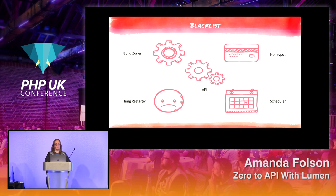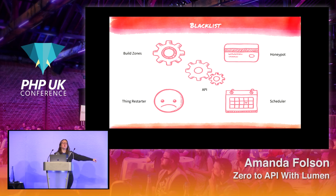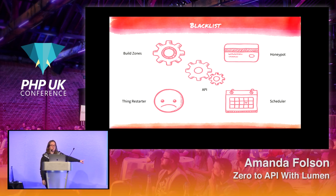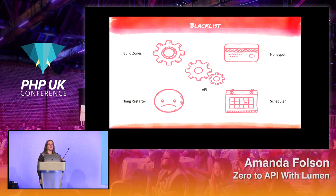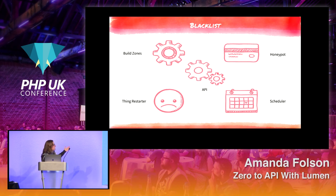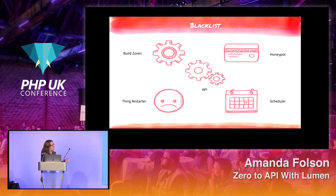There's a little service to build DNS zones, a honeypot — basically a fake server I want people to break into so I can see what they're doing and prevent it in the future. There's also a thing restarter that restarts a service with a memory leak at specific intervals, and a scheduler that handles queues and messages. The point is there's always one entry point via the API in the middle, and Lumen has been a great fit because it's relatively lightweight.